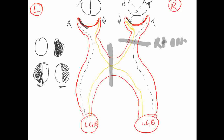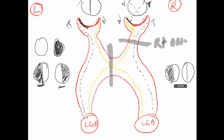This is heteronymous hemianopia. Homonymous means the images can be superimposed. These two cannot be superimposed because opposite sides are affected — both nasal sides are affected, and vision from the temporal side is lost. So this is heteronymous hemianopia, also known as bitemporal hemianopia.